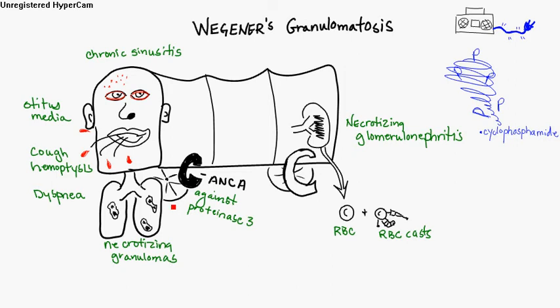Here's a picture for Wegener's granulomatosis. Think Wegener's — you get a lot of things that come up. Somebody that keeps coming in with chronic sinusitis, having a problem, wondering why it just won't go away. The perforation of the nasal septum happens in 95% of these patients.